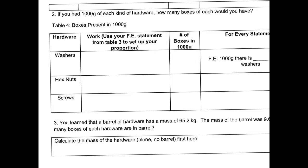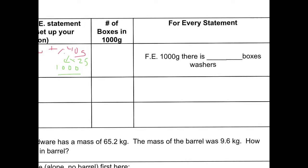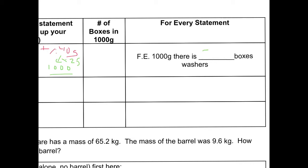This time it asks us, given 1,000 grams, how many boxes would we have? We're trying to relate grams to boxes. From the previous calculation, for every one box of washers there is 40 grams. I want this for 1,000 grams, not 40, so this will be times 25 — giving us 25 boxes. Your numbers may be a little different, but for me, 1,000 grams of washers equals 25 boxes.